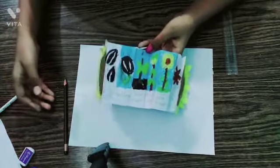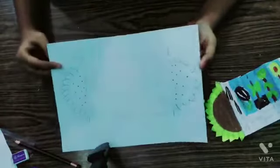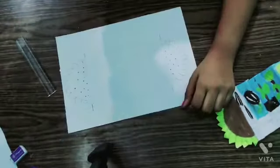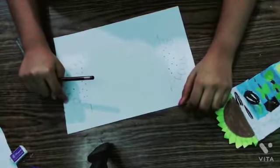So now we will draw the six small boxes. Now I have drawn the sunflower as well as the small boxes. Now I will draw the life cycle in these boxes.